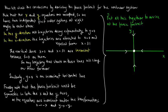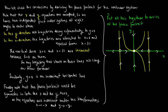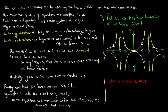We can now identify the three fixed points and fill out the rest of the phase portrait for the nonlinear system. Note that (0, 0) is a stable node and (±1, 0) are saddle points, exactly as expected from the linearization.